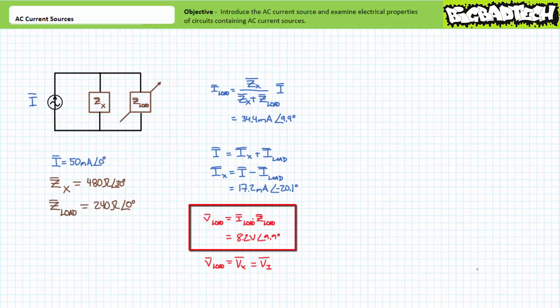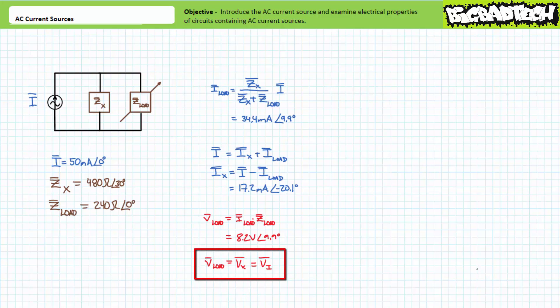An application of Ohm's law demonstrates the voltage across the variable load impedance to be 8.2 volts at an angle of 9.9 degrees. Since the fixed impedance is in parallel with the variable load impedance, voltage across the fixed impedance is also 8.2 volts at an angle of 9.9 degrees — voltage across elements in parallel is the same; this is the most fundamental property of parallel circuits. An application of Kirchhoff's voltage law demonstrates that this drop must be caused by an equal and opposite voltage rise of 8.2 volts at an angle of 9.9 degrees produced by the current source — the voltage magnitude and phase shift necessary to push 50 milliamps at an angle of zero degrees through this parallel impedance combination.